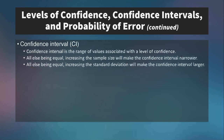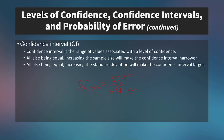A confidence interval is the range of values associated with a level of confidence. Increasing the sample size will make the confidence interval narrower, and increasing the standard deviation will make the confidence interval larger. Since standard error of the mean equals standard deviation over the square root of sample size, if the sample size gets larger, the standard error goes down and the confidence interval narrows. If the standard deviation gets larger, the standard error goes up and the confidence interval gets larger.